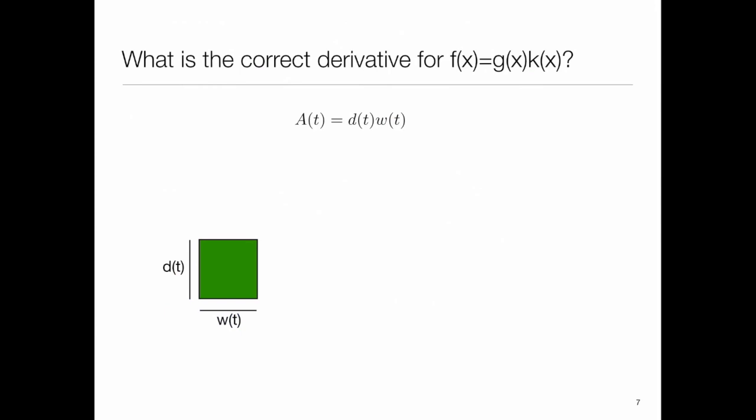So let's see how we get the correct product rule. The way I'm going to do that is by calculating the area of a square that changes, its dimensions change in time.